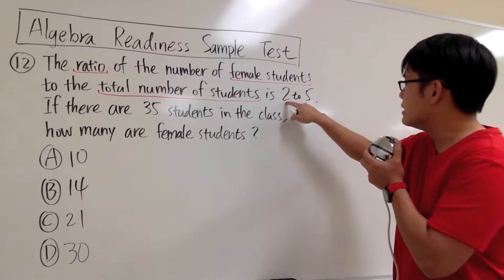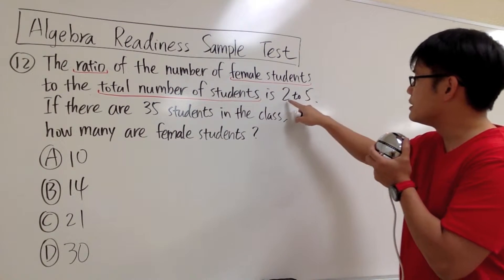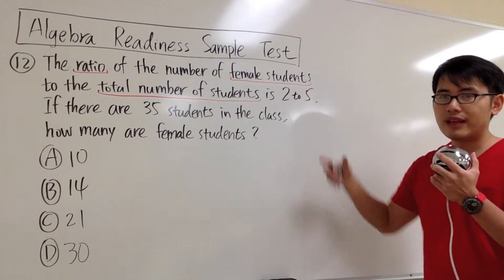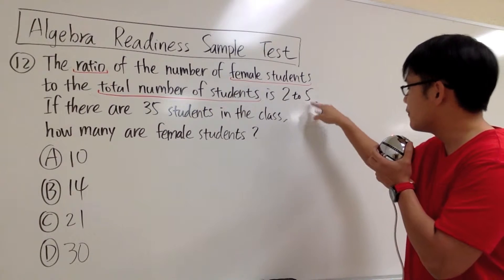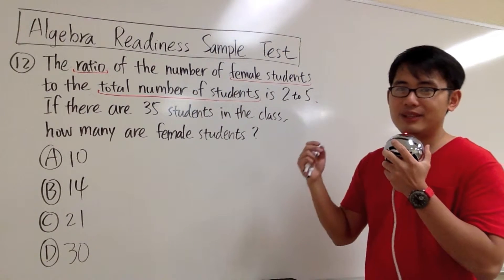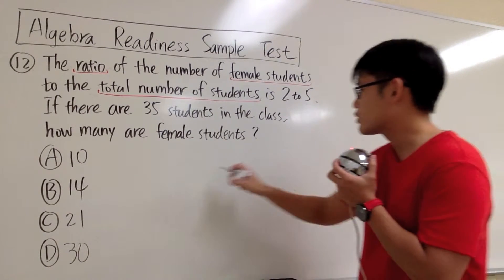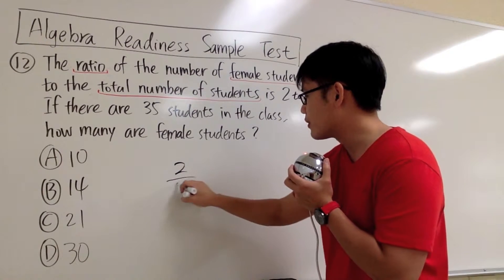We know that is 2 to 5. The word 'to' is another way to represent ratio. Once again, I will look at the 2 to 5 and change that into a fraction. The fraction will be 2 over 5.